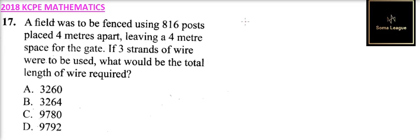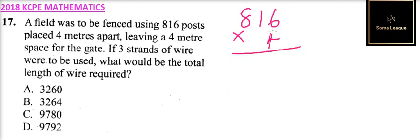Since there are 816 posts and a space of 4 meters, we multiply 816 by 4 to get the circumference. So 4 times 6 is 24, carry 2; 1 times 4 is 4, add 2, you get 6; 8 times 4 you get 32. So 816 × 4 = 3264.